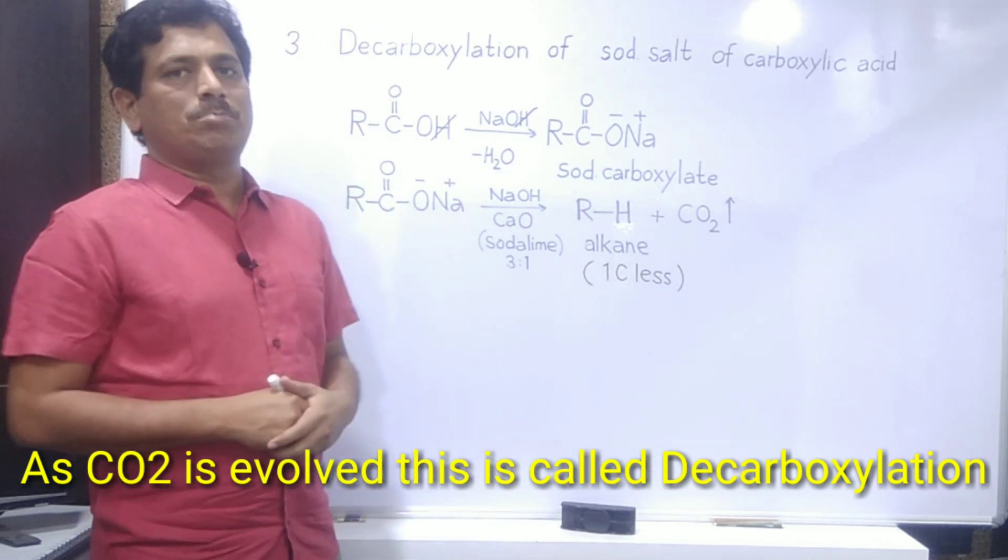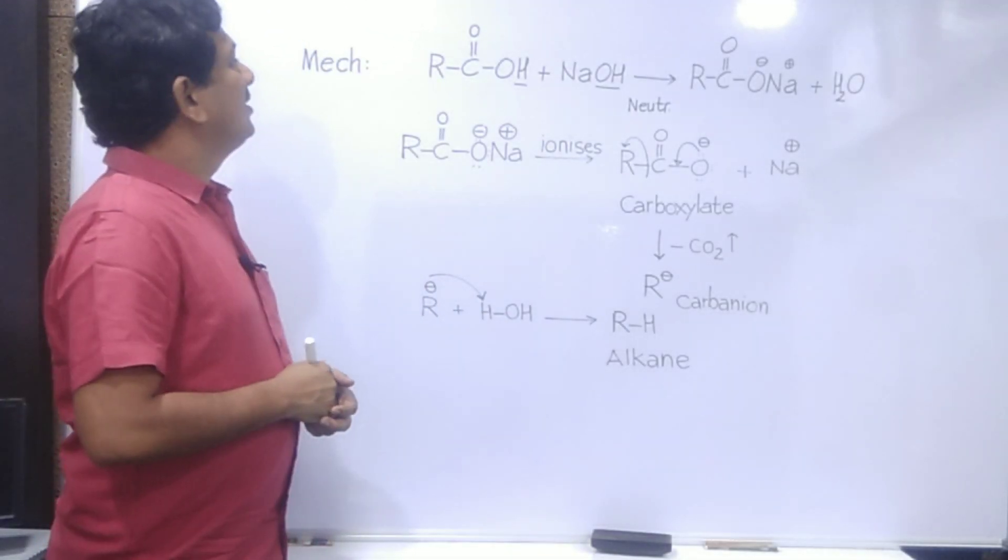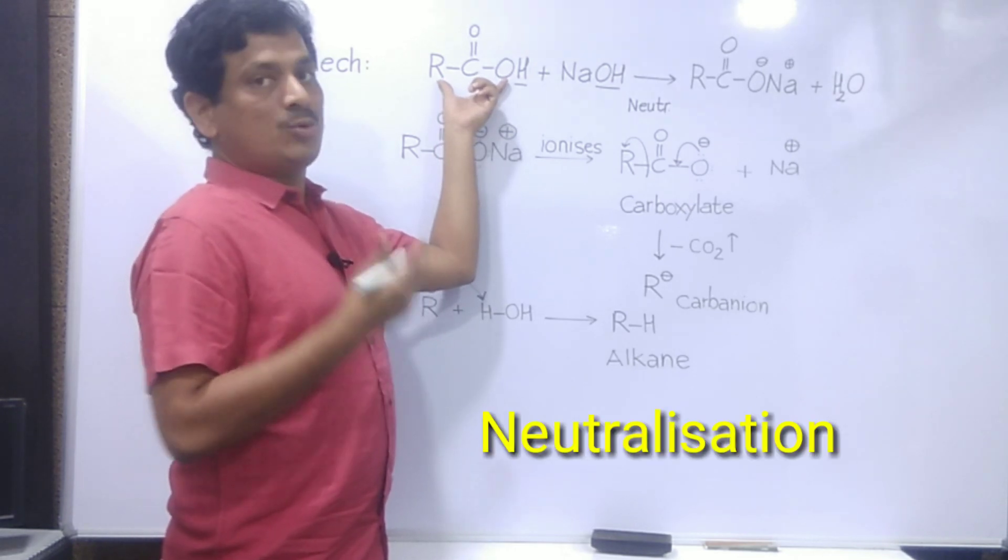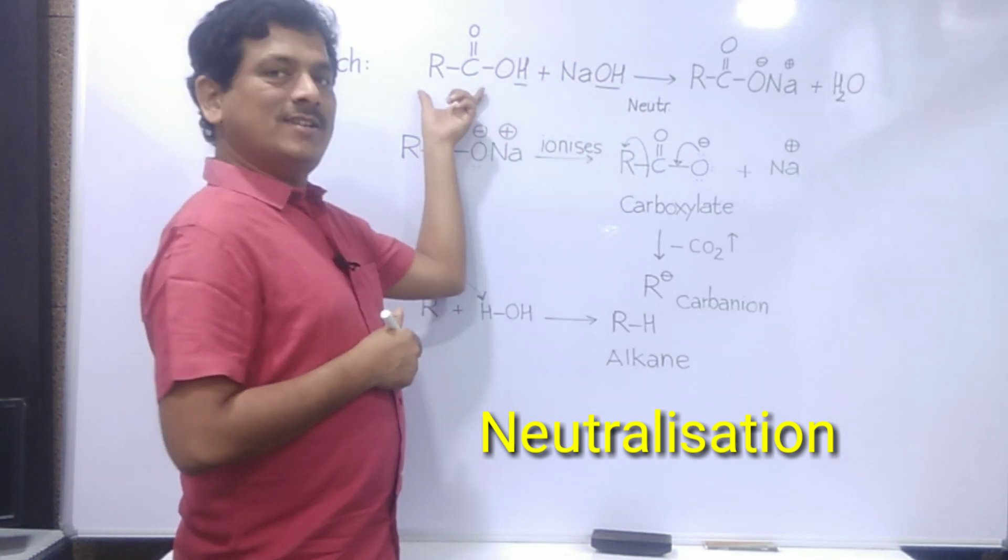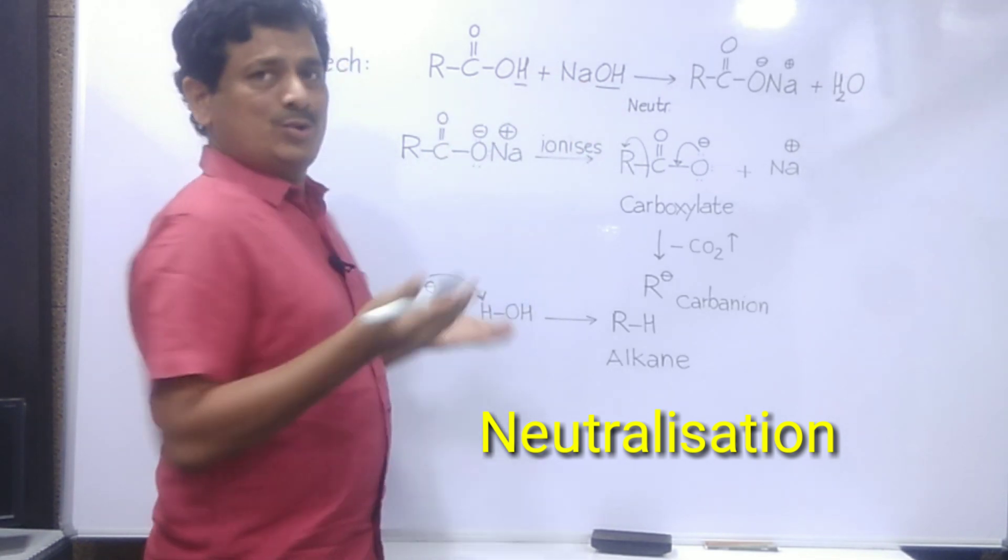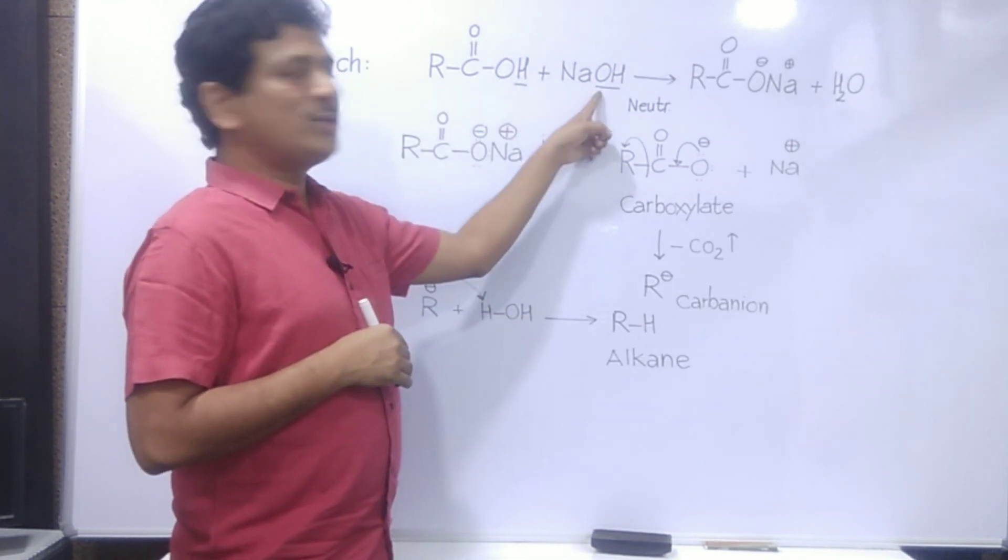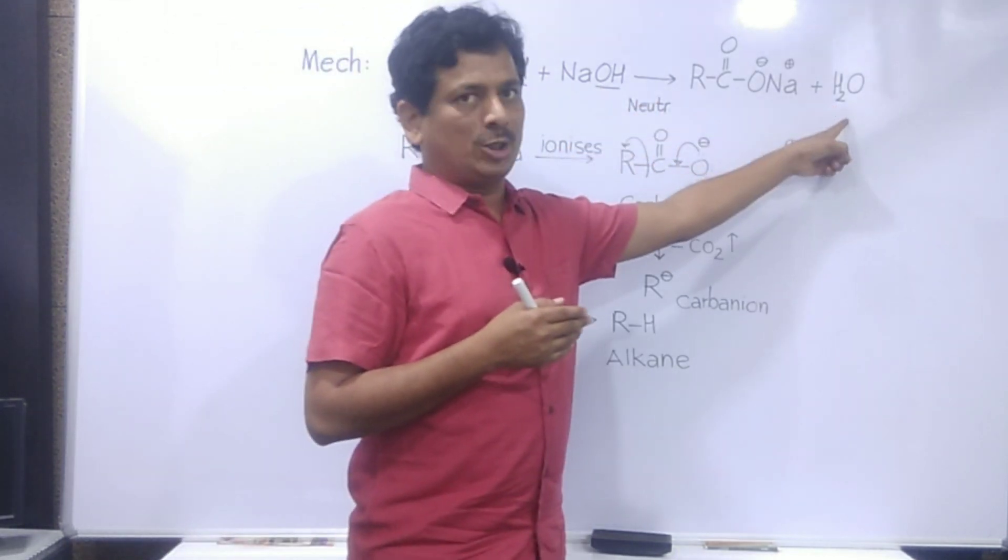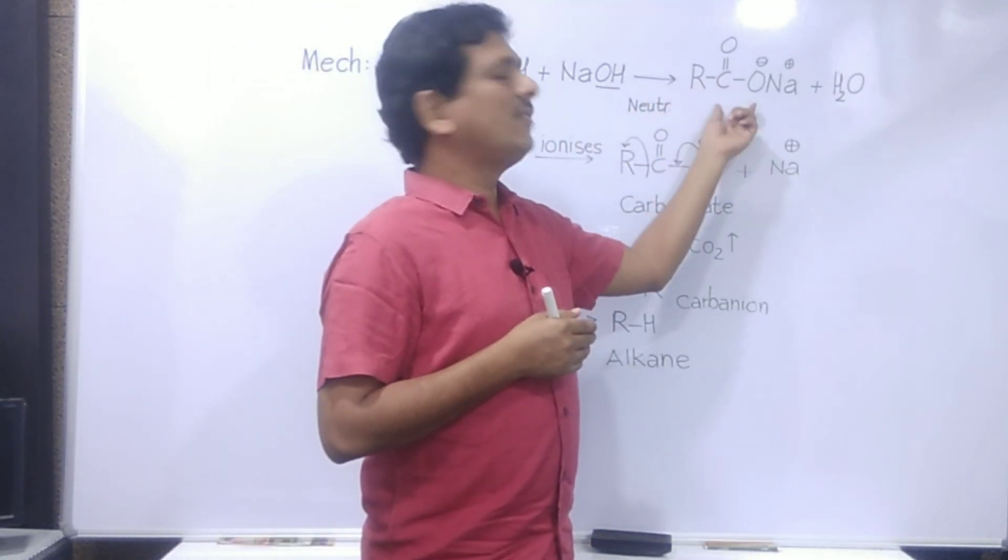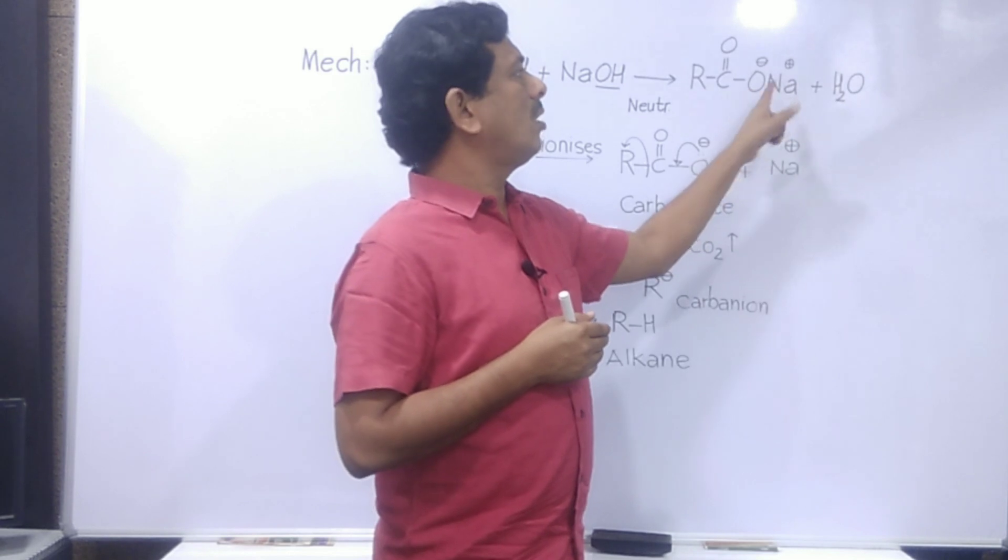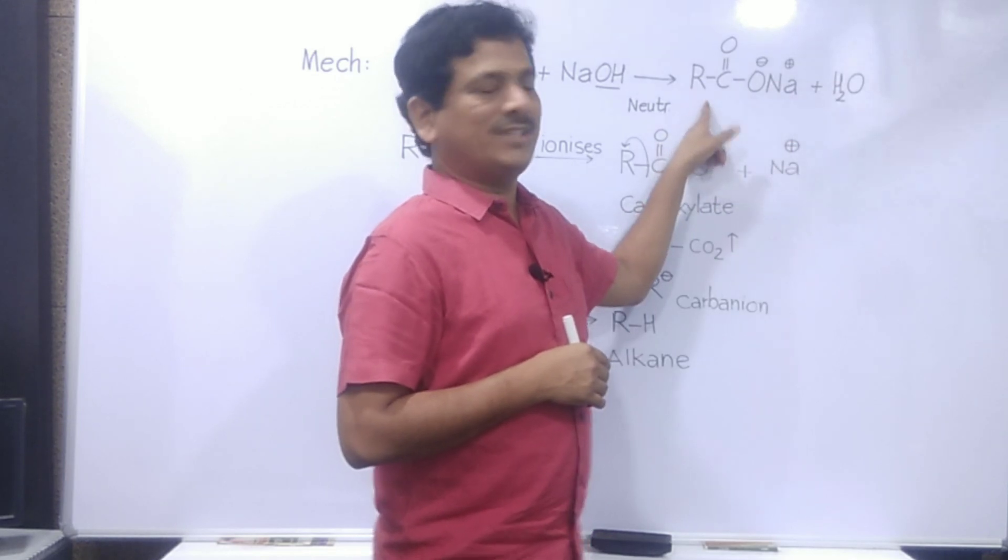Let us now see the mechanism of this reaction. What is happening here in the first step is neutralization. A carboxylic acid and sodium hydroxide, an acid and a base, they are reacting. When an acid reacts with a base, neutralization takes place. H of acid and OH of base will evolve as a water molecule. So this sodium will take the place of H+, so we are getting RCOONa. It is called sodium carboxylate.